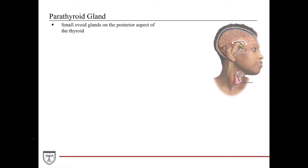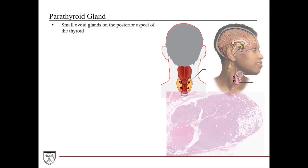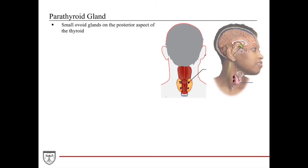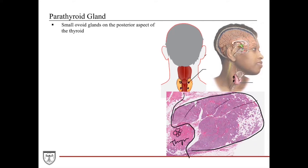The parathyroid glands are small, ovoid, fleshy structures that sit on the posterior aspect of the thyroid. From the posterior perspective, we should see about four of these parathyroid glands. The parathyroid glands are epithelial tissue-derived, so they're very cellular. In this low-mag image, we can appreciate the intimate anatomic relation between the thyroid gland anteriorly — with its colloid-filled follicles — and the parathyroid gland posteriorly, which is this more cellular structure. With age, it is not uncommon to accumulate unilocular adipocytes within the parenchyma.